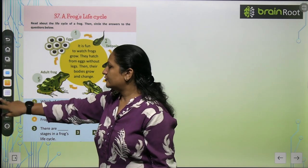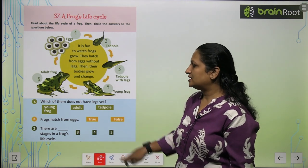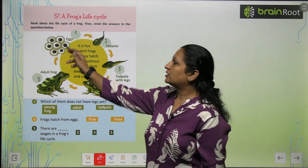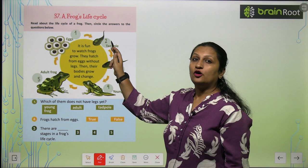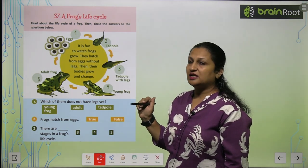Here we have a frog's life cycle and you have to read it and then answer these questions. First of all, there are frog's eggs. These eggs hatch and make a tadpole. The tadpole's tail is made.